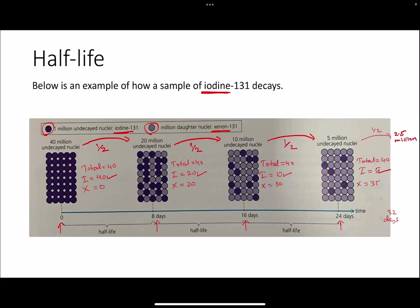There's a common misconception among students — they say that the number of xenon nuclei, the daughter nucleus, doubles with every half-life, but that is not the case. It is increasing, but it goes from 0 to 20, then from 20 to 30, then from 30 to 35 — so it's not doubling after every eight days. Iodine is becoming half after every eight days.